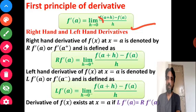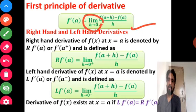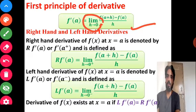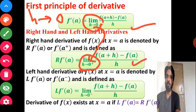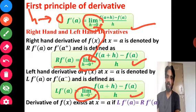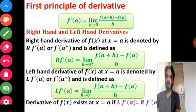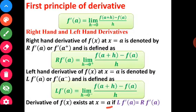As we know, a limit exists when the right-hand limit and left-hand limit are both equal. So when h tending to 0 is approached from the right side — h tending to 0 plus — this limit becomes the right-hand derivative. From the left side, h tending to 0 minus gives the left-hand derivative. The derivative of a function will exist only when the left-hand derivative and right-hand derivative are both equal.